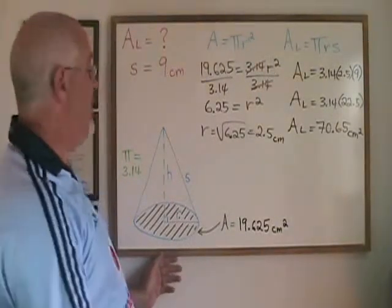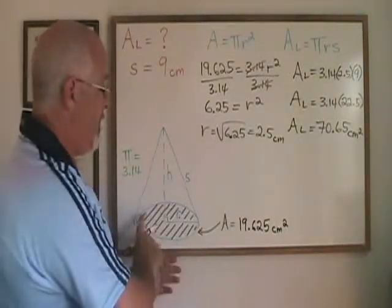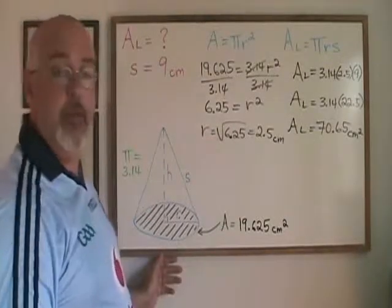Remember that lateral area includes the area of the slanted outside part of the cone, but does not include the area of the circle at the bottom.